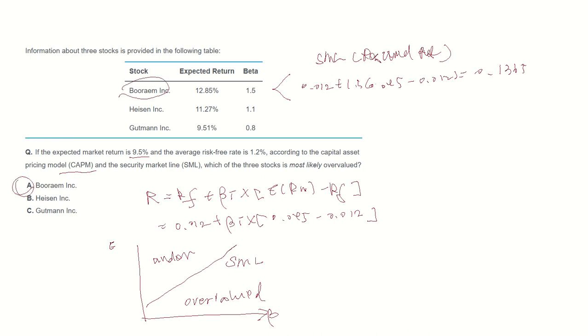Let's continue and calculate the rest. For Heisen, required return becomes 0.012 plus beta is 1.1, multiplied by 0.095 minus 0.012, becomes 0.1033. So expected return is bigger, so Heisen is undervalued.